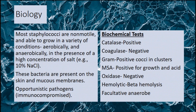So for biology, most Staphylococci are non-motile and able to grow in a variety of different conditions, such as aerobically and anaerobically, and they can also grow in the presence of a high concentration of salt. These bacteria are present on the skin and mucous membranes. They're opportunistic pathogens, considered a secondary infection for immunocompromised patients such as in surgeries. They are catalase positive, coagulase positive, and gram-positive cocci.